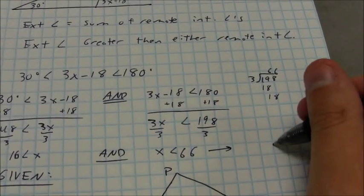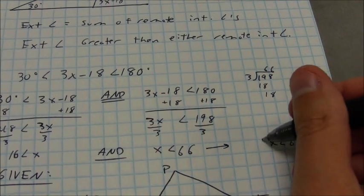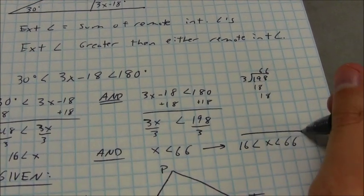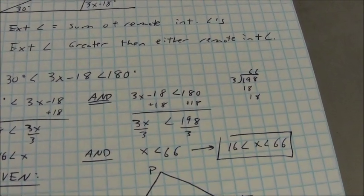Normally you write this in what's referred to as compound inequality form. x is less than 66, greater than 16, and that would be my final inequality.